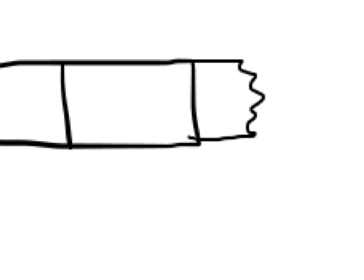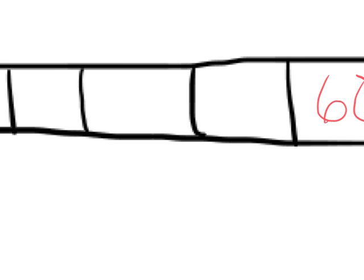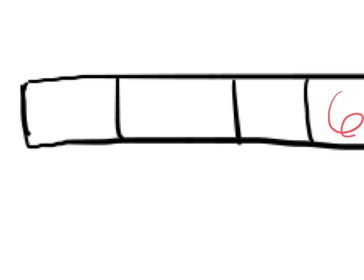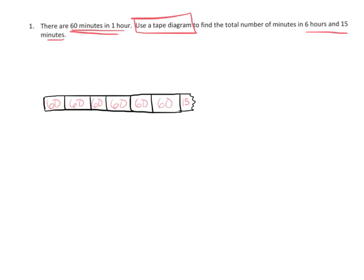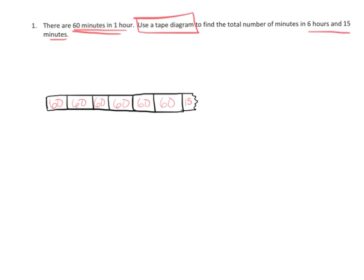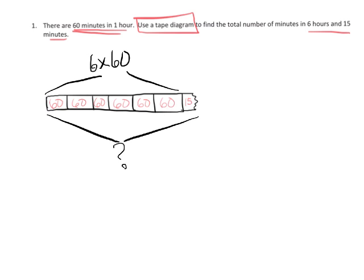I'm going to zoom in and call that 15 minutes. Each of these hours counts as 60 minutes, so I'm going to label each of these with a 60. If I zoom out, I can see the whole problem now. The question wants us to figure out the whole total, but really this piece here is 6 groups of 60, and then we have to add in that extra 15.